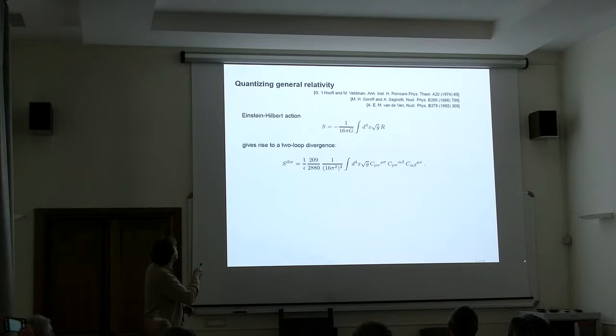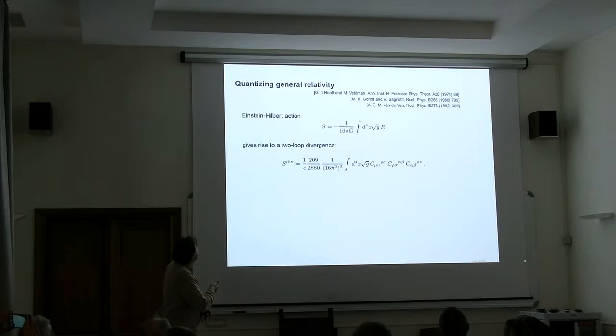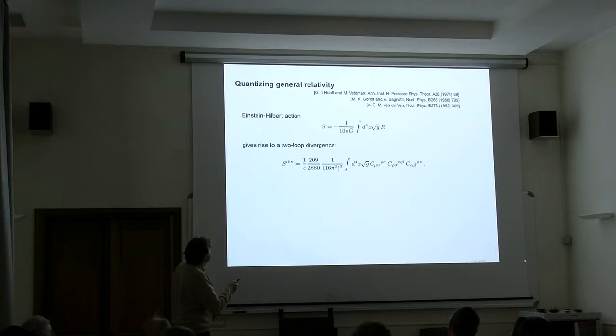The naive starting point could be as follows: start from the Einstein-Hilbert action and apply the same laws of quantization that work for the other forces. And then we see it doesn't quite work. At one loop you can still get away with the quantization procedure, but at two loops you encounter the following divergence. Here we have the Weyl tensor. You see this is a term which contains Weyl cubed. This is not of the form of the initial action, so you cannot reabsorb this divergence in a redefinition of Newton's constant.